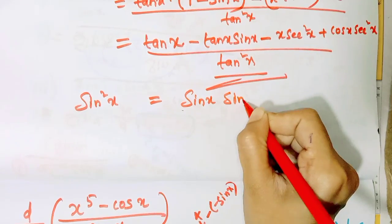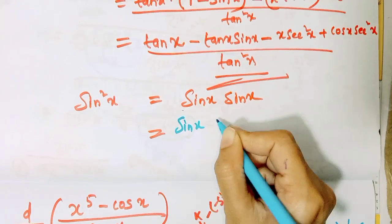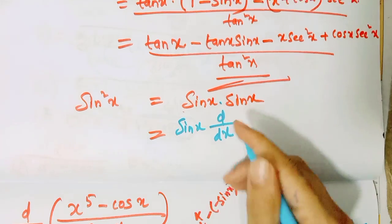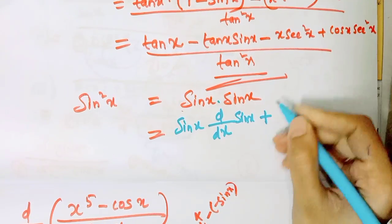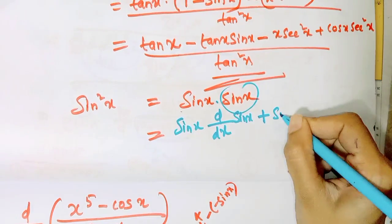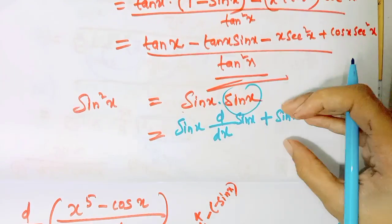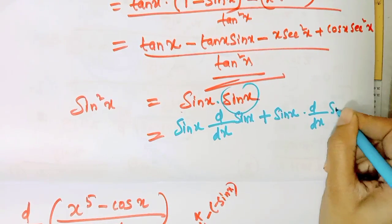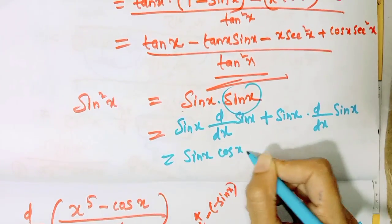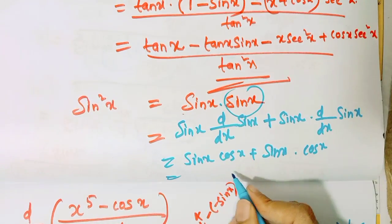Here we will use the product rule. The product rule is: first function into derivative of second function, plus second function into derivative of first function. So sin x into derivative of sin x — the derivative of sin x is cos x — plus sin x into cos x. That gives sin x cos x plus sin x cos x.